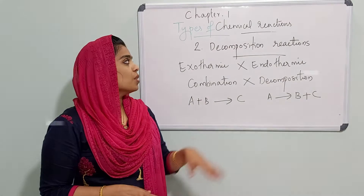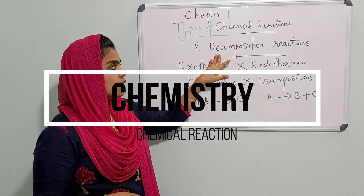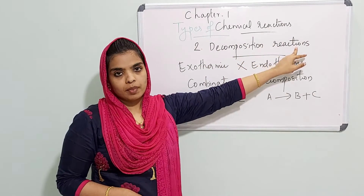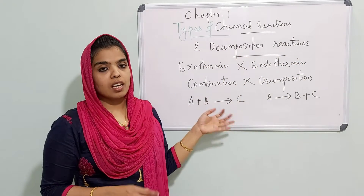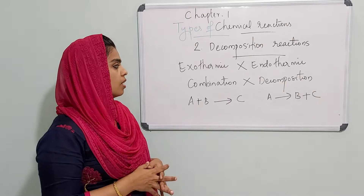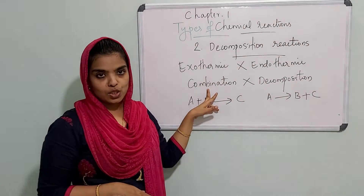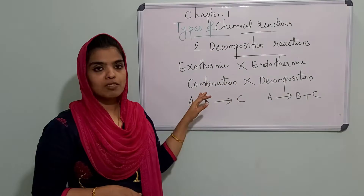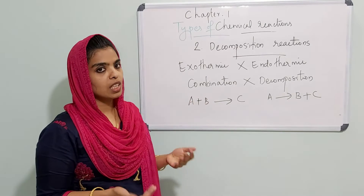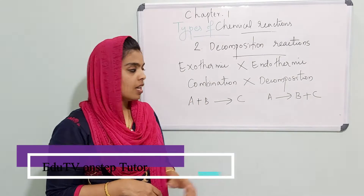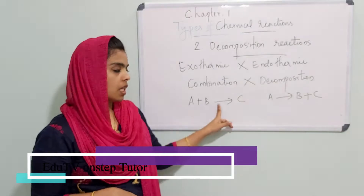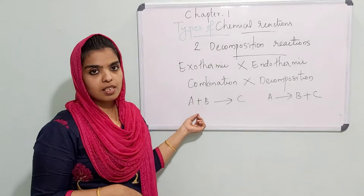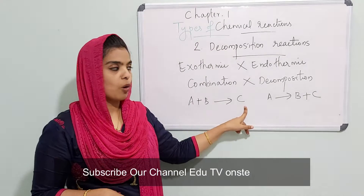Now we have our type 2 chemical reactions — decomposition reactions. Decomposition reactions are the opposite of combination reactions. In a combination reaction of the type A plus B gives C, two or more reactants combine and a single product is formed.